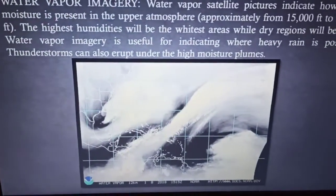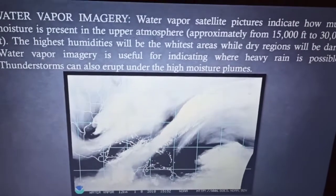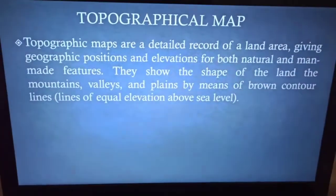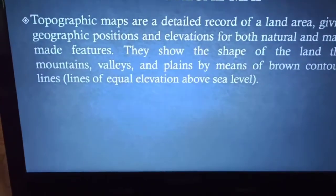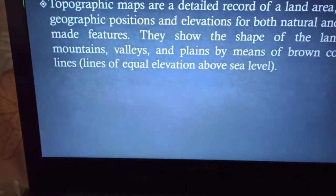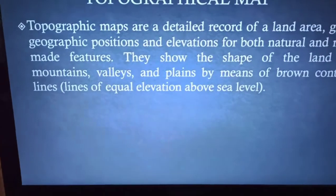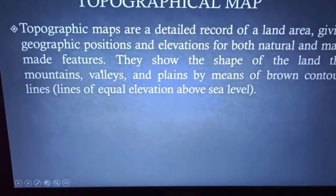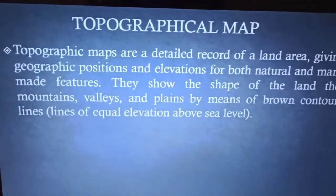Now we will go to the topic of topographical maps. Topographical maps are a detailed record of a land area, giving the geographic position — meaning the latitudinal and longitudinal values — and the elevation for both natural and man-made features like houses, parks, and everything.